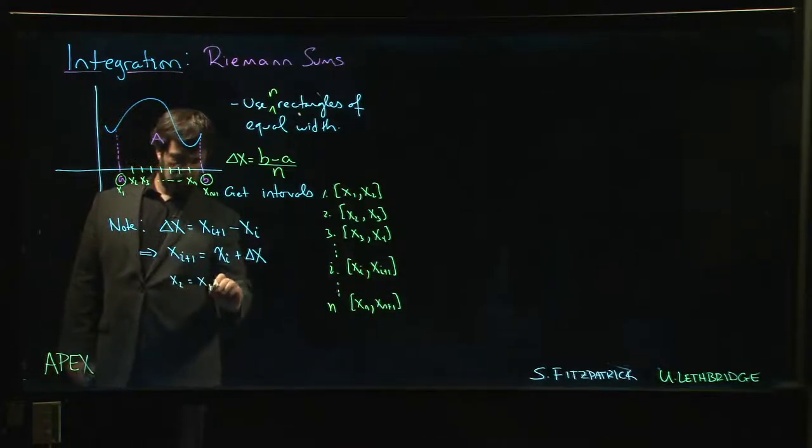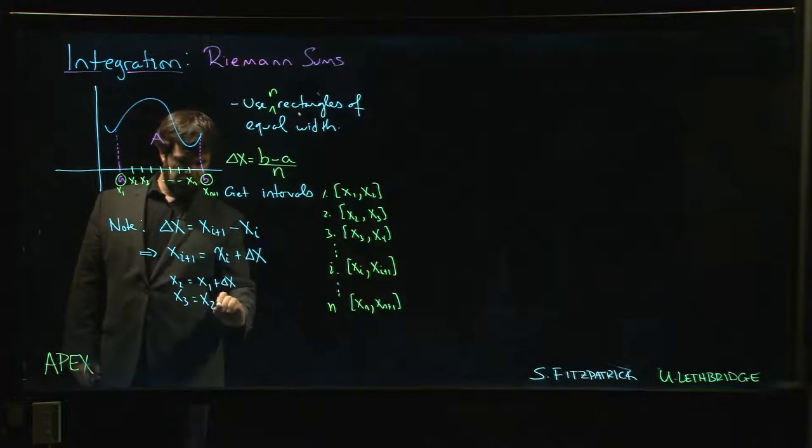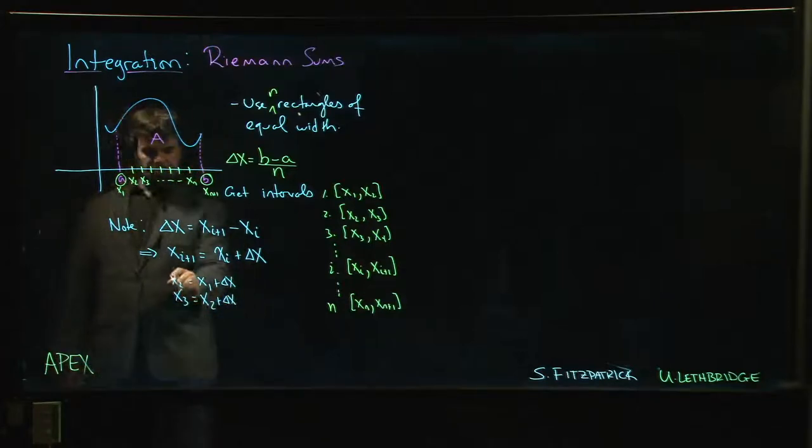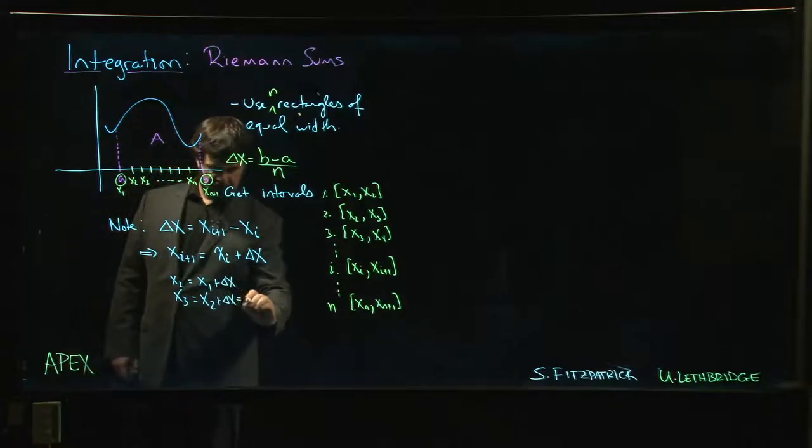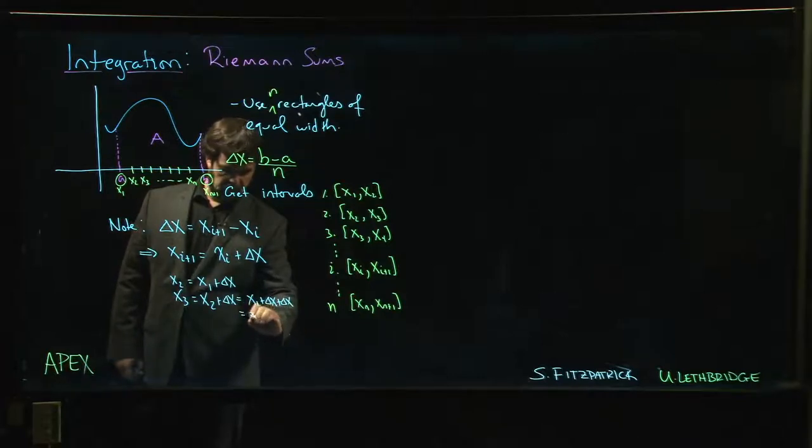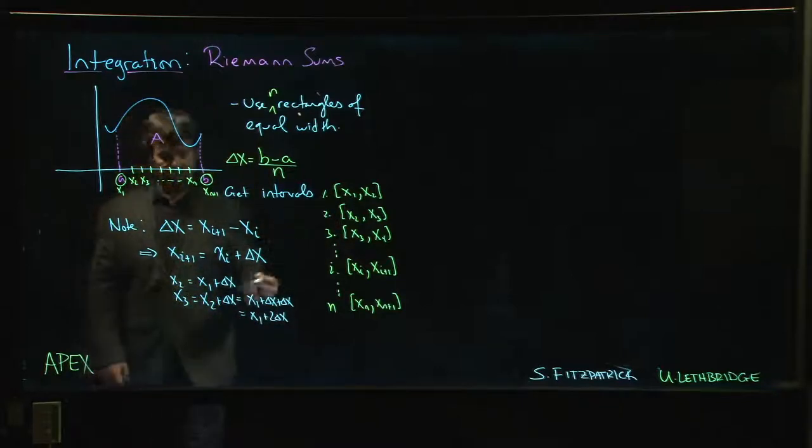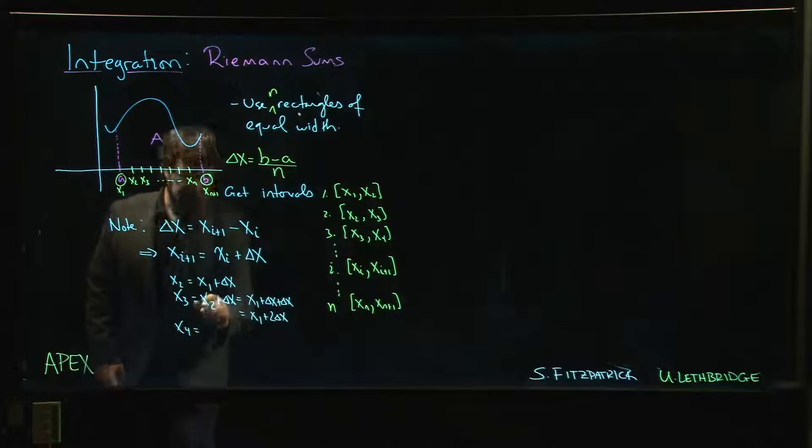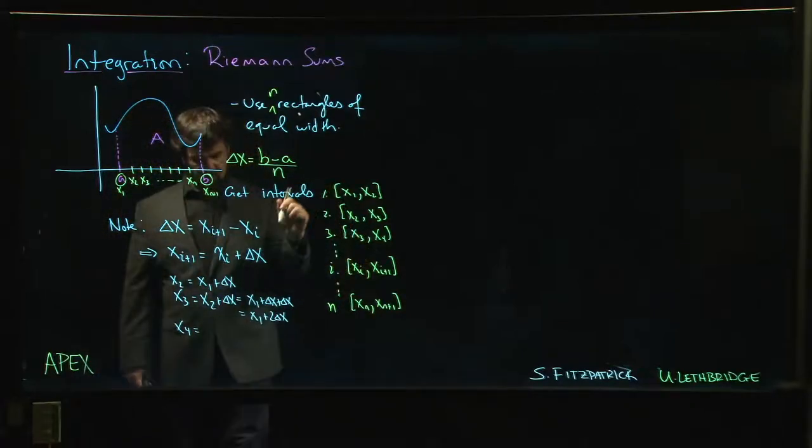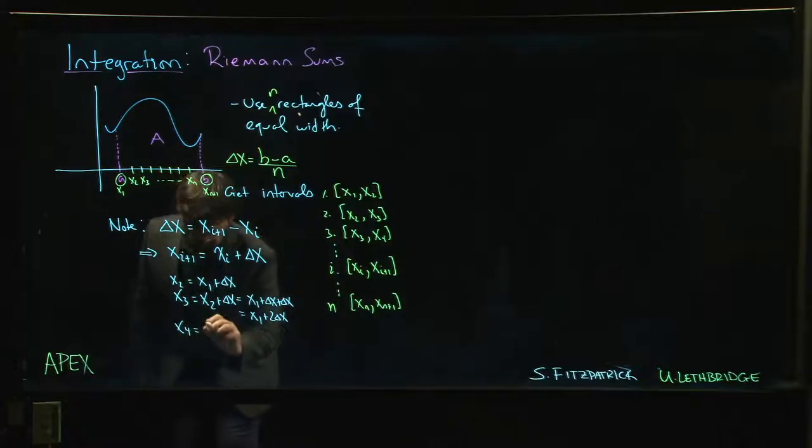x3 is x2 plus delta x, but x2 is x1 plus delta x, so it's x1 plus delta x plus delta x, so it's x1 plus 2 delta x. Then to get to the next one, you add delta x again. So x4 is going to be x3 plus delta x, which is - well, I have 2 delta x, I add one more - so it's going to be x1 plus 3 delta x, and so on.